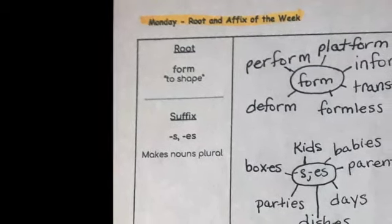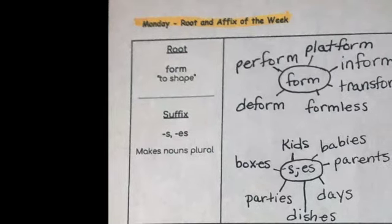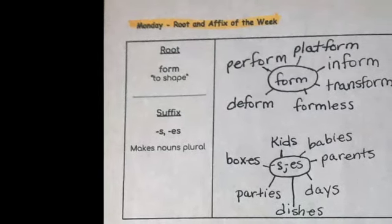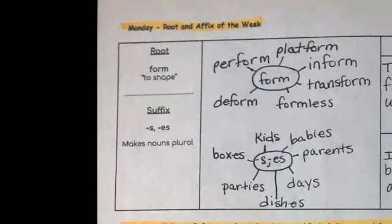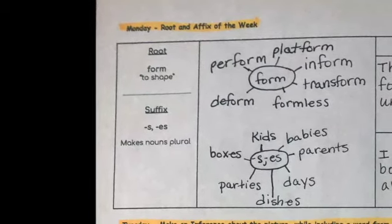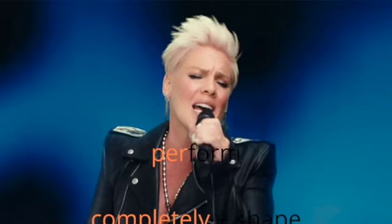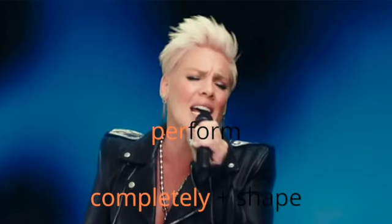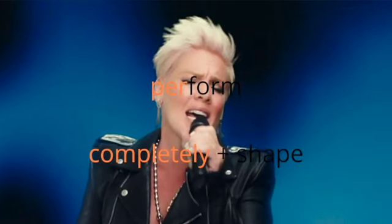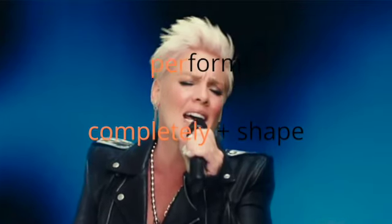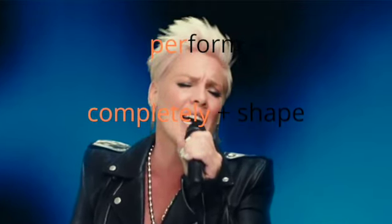Before you copy down these word webs, watch the slides that are going to come up next because they are visuals for some of the words that I am attaching to the word web. For example, per-form. Per means completely, and form means to shape. So perform means shape completely, or to accomplish. This is a picture of the singer Pink performing.